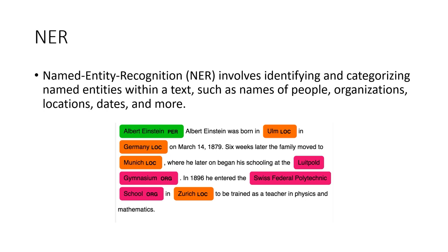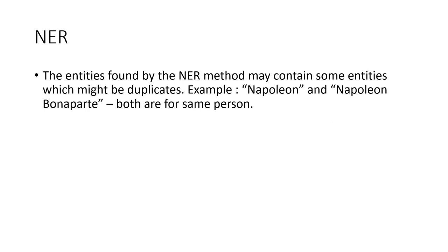To make the knowledge graph we used the NER step. NER means Named Entity Recognition, which involves identifying and categorizing named entities within a text such as names of people, organizations, locations, dates, and more. For example, Albert Einstein has been recognized as a person, ULM as a location, and Germany as a location.